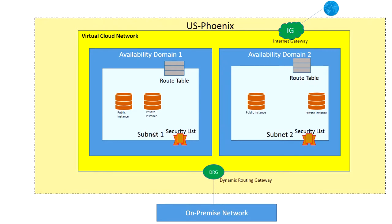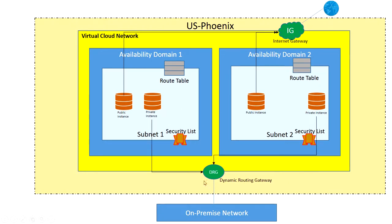The best practice is that each instance should have both a public and private IP, and your route table will guide whether it can be connected through the internet gateway or DRG — giving you flexibility. If you don't want an instance to be accessible through the internet, simply don't include the route rule allowing connection through the internet gateway in the route table; only include the rule allowing connection through DRG. Public instances are accessed via the internet gateway, and private instances connect through the dynamic routing gateway.